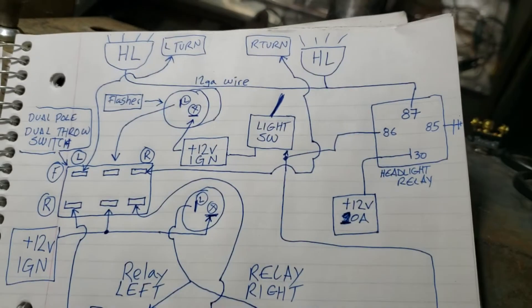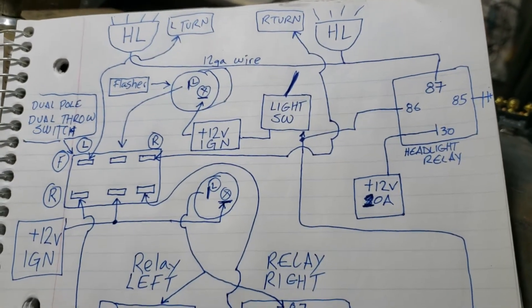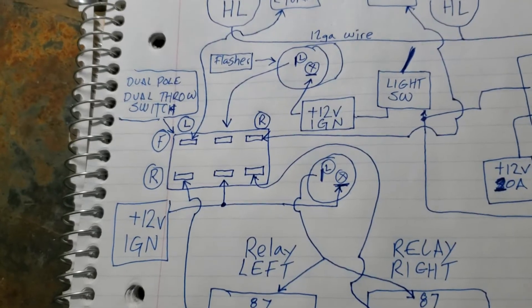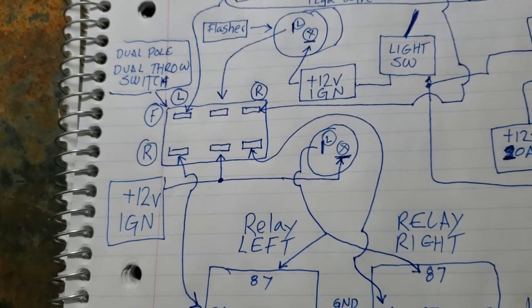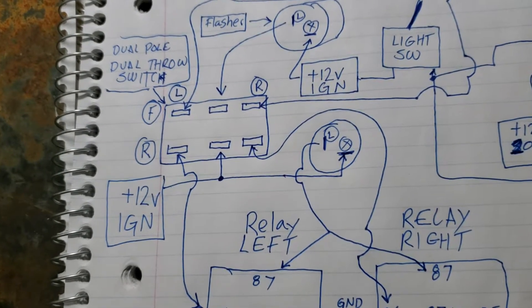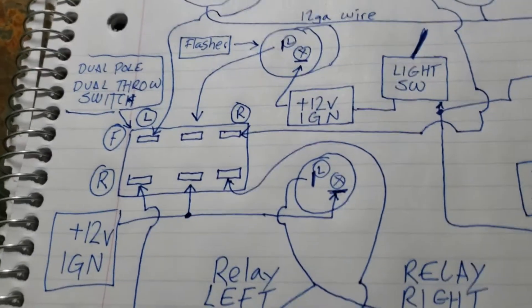Two flashers, one for the front, one for the rear. You need a dual pole, dual throw switch. So it's just an on-off-on switch with six things on the back to attach your wires to.